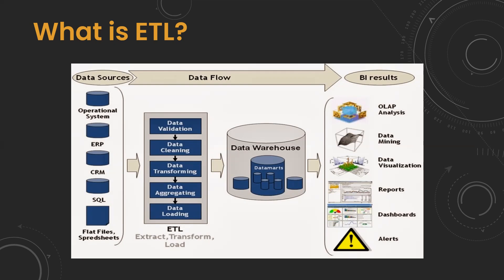ETL mainly works on data. For example, let's take a company or organization that has different branches, and those branches have their own internal databases. Let's say I have a bank with different branches — branch one, branch two, and so on. Within these branches they have their own databases, and at the end of the day all the data is dumped into the main server. Whatever data is available in these local servers is called transactional data, because it keeps updating every second.